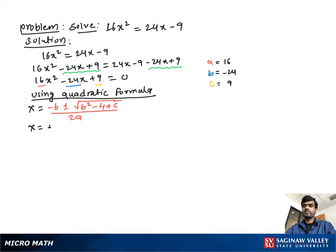Now substituting the value of a, b, c in this equation, we get x equal to positive 24 plus minus negative 24 square minus 4 times 16 times 9 over 2 times 16.